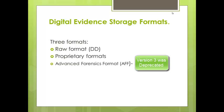Since the most popular acquisition method is disk to file — which we call an image — let's talk about the formats we store those images in. There are three kinds. The first is the raw format, using the DD command, a Unix/Linux command, to create a raw image of the drive being investigated. In the following video, we'll talk about DD, DCFLDD, and DC3DD — three methods for raw formats.